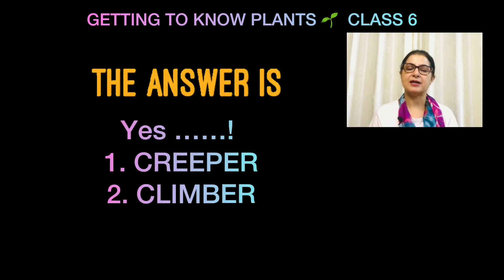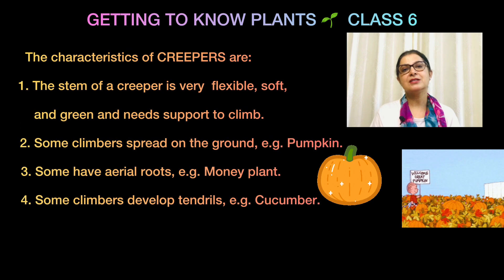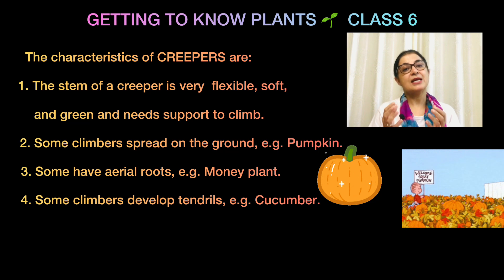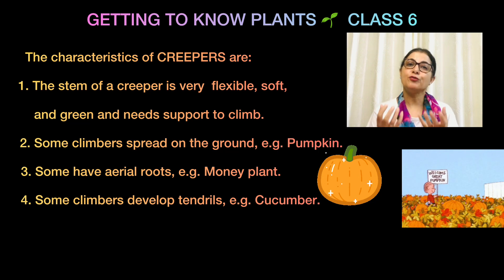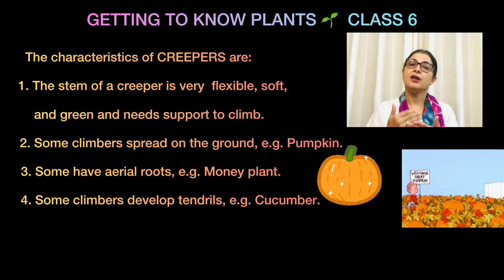Creepers — if you have seen watermelon plants, these are creepers. Their stems are very weak. Koi cheez jo weak hogi wo naturally seedhi khadi nahi ho sakti, so since they cannot stand upright, they start creeping on the ground. That is what a creeper is.